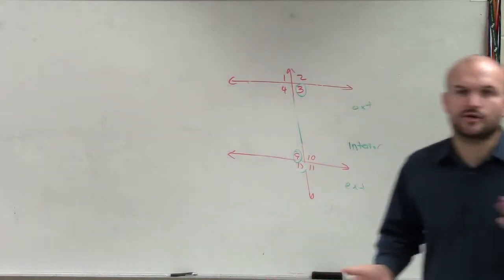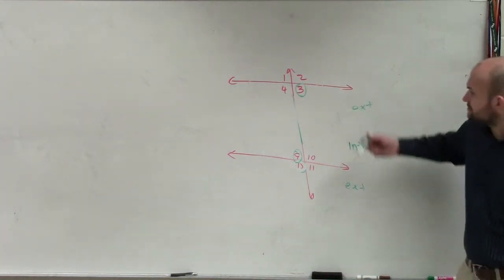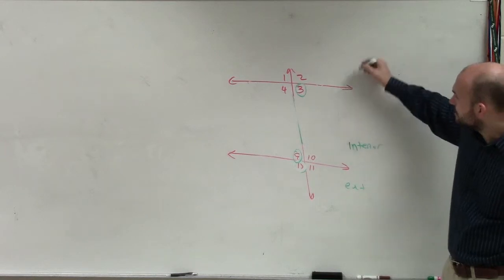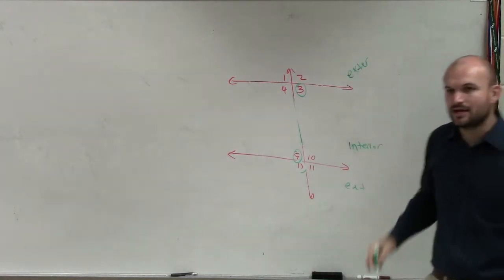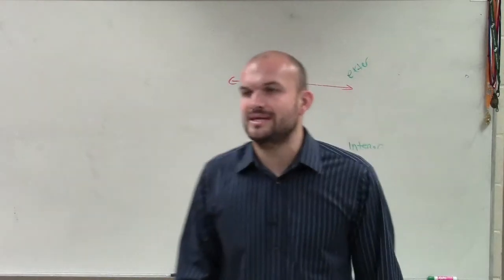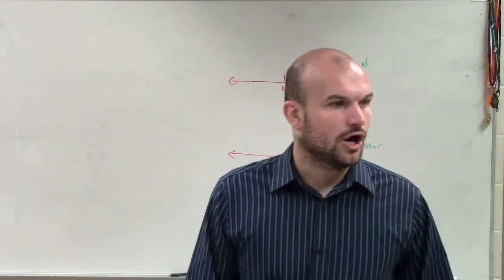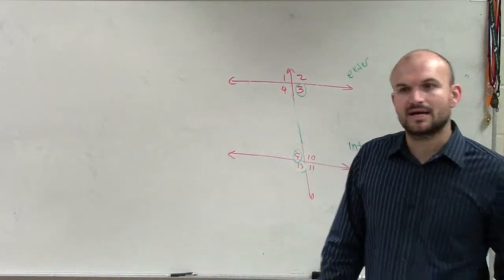So when you're looking on your own book, what you'll notice is we can determine that these are interior, these are exterior. So number 3, angle 3 and 9, are those going to be interior, alternating, or consecutive angles?